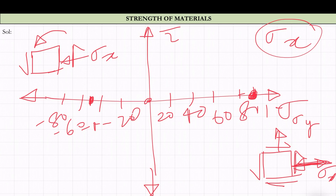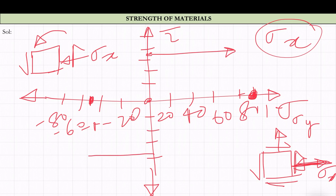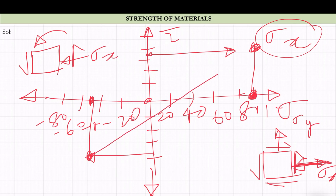Anti-clockwise is taken as negative and clockwise as positive — you can take it either way, there is no harm, you will get the same result. Tau_xy is 75, so 75 is plotted somewhere here on the tau axis. We will be plotting these two coordinates: sigma_x with its shear and sigma_y with its shear, which lie on the periphery of the circle.